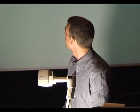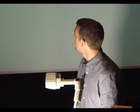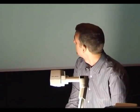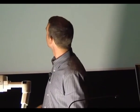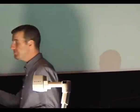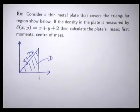Let's do an example and see how we can solve these problems. We've got a thin metal plate in the shape of a triangle. We're given a density function and we're asked to calculate the plate's mass, the first moments and the centre of mass. The first thing we want to do is to mathematically describe the region D.